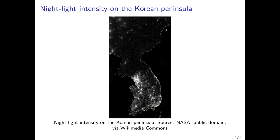Here we have the Korean Peninsula. This would be South Korea and this would be North Korea. You can see that the South is bright — you have Seoul, Busan, and so on, and there seems to be quite a lot of economic activity. The North is dark, except for Pyongyang, the capital. Apart from that, everything is dark, and this is an indication that there is not much economic activity going on.